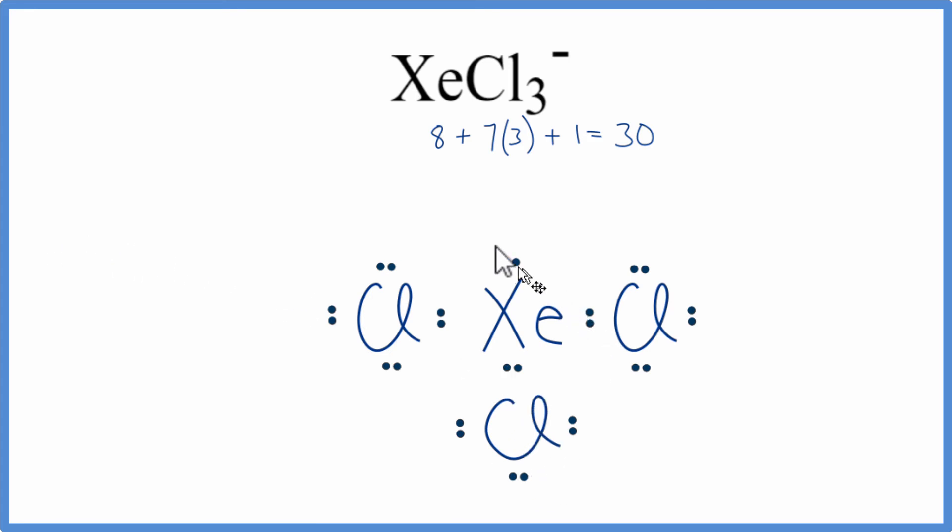Xenon is an exception to the octet rule. It can have extra valence electrons. So we're going to put another pair here, and then one right here. So now we've used all the valence electrons for XeCl3 minus.